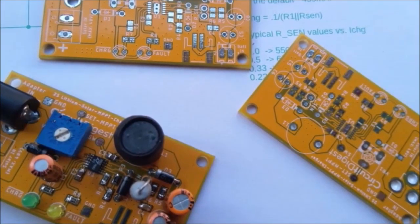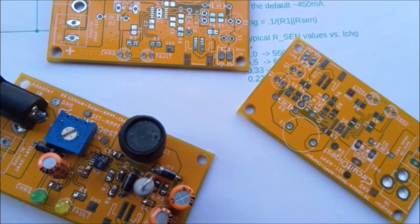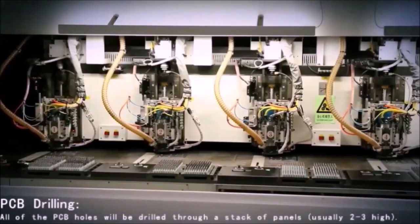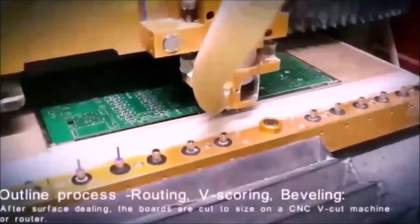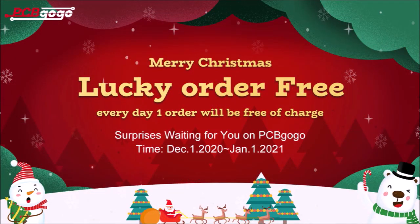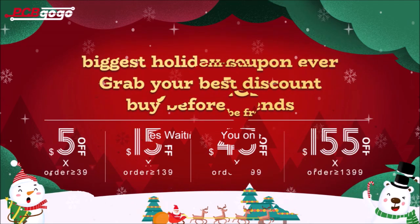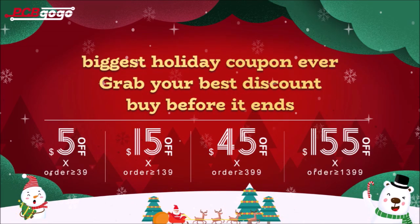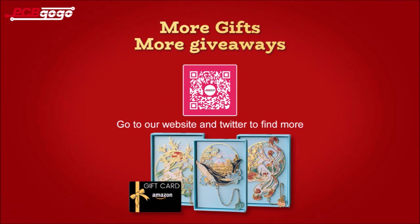But before we get there I would like to mention the manufacturers of these shiny yellow PCB boards PCBGoGo. PCBGoGo provides high quality PCB prototype, PCB assembly and PCB layout services. Recently PCBGoGo has also launched the great sale for Christmas and New Year. Throughout December and January every day one lucky winner will get free PCBs and this year they are also providing some exciting coupons of up to $155 off. You can find more information about this using the link in description. Also follow PCBGoGo on Twitter to get more Christmas giveaways and gift cards. You can also scan this QR code to know more.